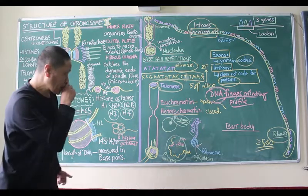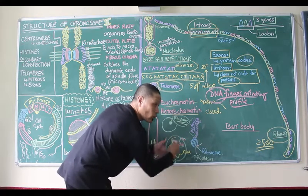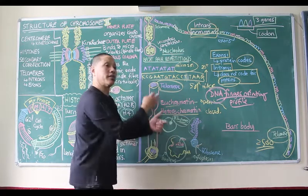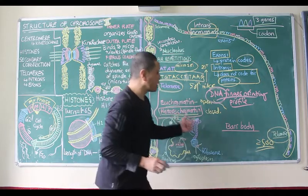Euchromatin is the one which opens up—DNA that opens up and is ready for the mRNA to read. Sometimes it never opens up; it's called heterochromatin and Barr body.